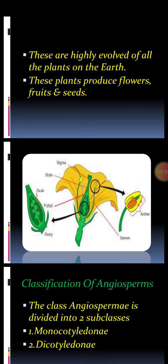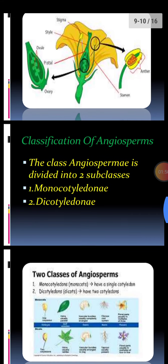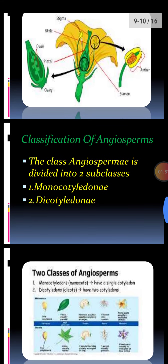A flower is shown with its different parts: sepals, petals, the male part — the androecium — which contains stamens with filaments, and the female part which contains the ovary. Now, for the classification of angiosperms: the class Angiospermae is divided into two subclasses — Monocotyledoneae and Dicotyledoneae.